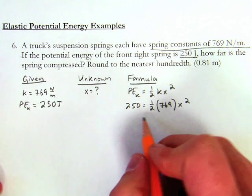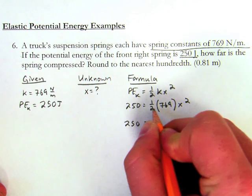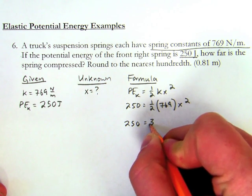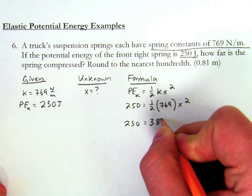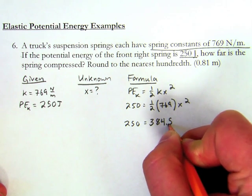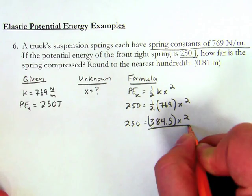Now as I do this math, I know that 250 is going to equal one-half of 769, which is 384.5, times x squared. Now when I divide both sides by 384.5, I realize that I'm going to come out with x squared.